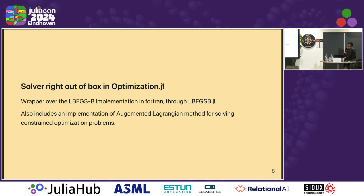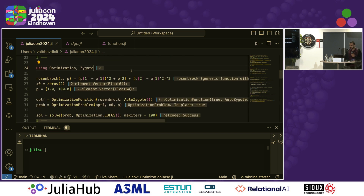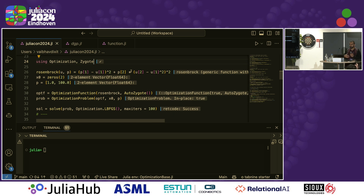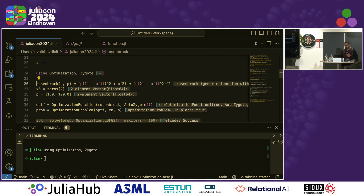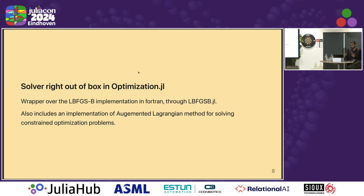We have recently added an LBFGS optimization solver available right out of optimization.jl — I wouldn't call it native because the actual implementation is in Fortran (LBFGSB). I have also implemented an augmented Lagrangian over it to handle generic nonlinear constraint problems. This helps cut down on the number of packages needed: before, you could end up loading six packages just to run a simple optimization problem, but now you can just load optimization and an AD package and use LBFGSB to get pretty good results. I believe the LBFGSB implementation we've wrapped is one of the most robust optimizers I've used.